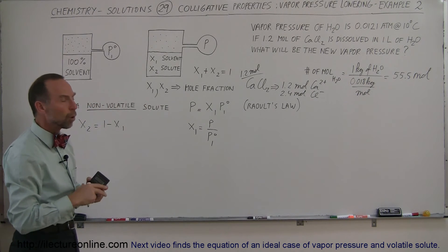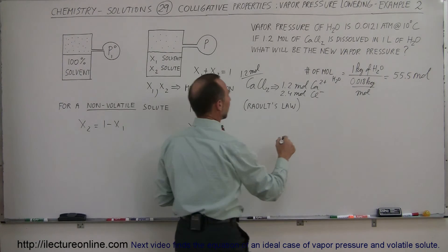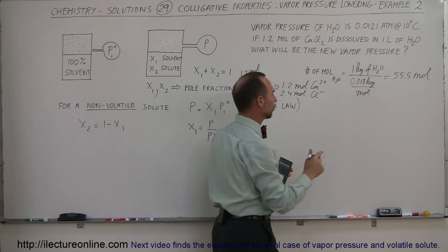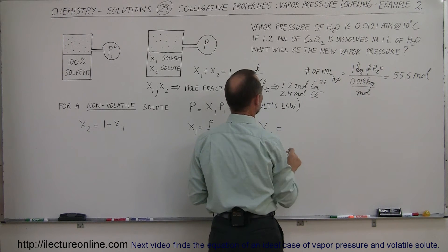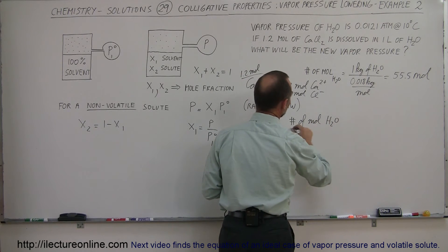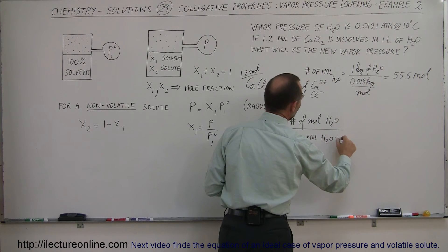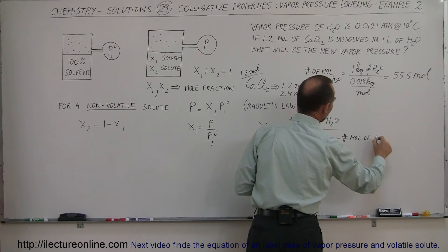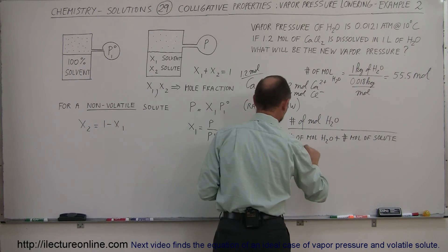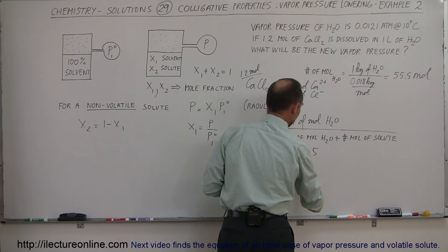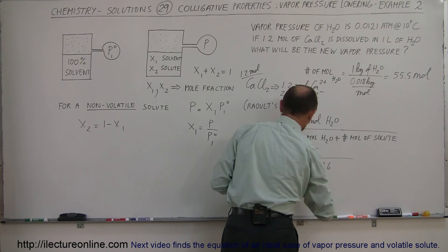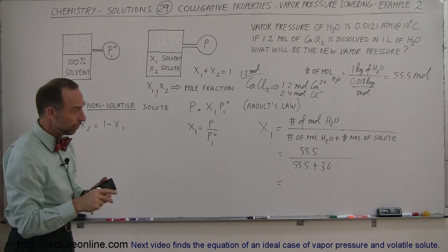So we'll have a total of 3.6 moles of solute. The mole fraction of the solvent, X₁, is equal to the number of moles of the solvent (water) divided by the number of moles of water plus the number of moles of solute (the calcium and the chloride). Plugging those numbers in: 55.5 divided by 55.5 plus 3.6 moles, which gives us the mole fraction of solvent water in the solution.